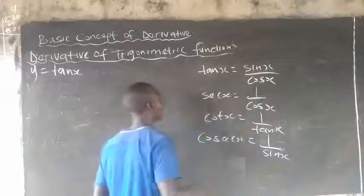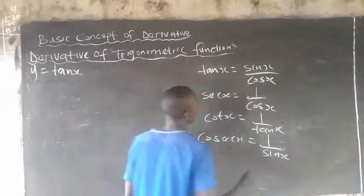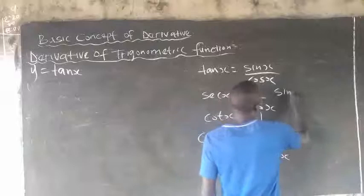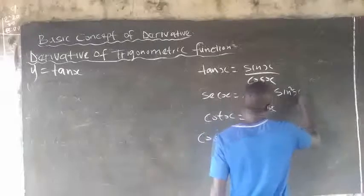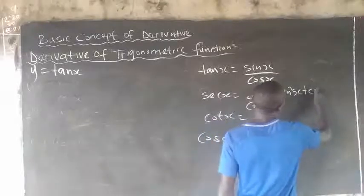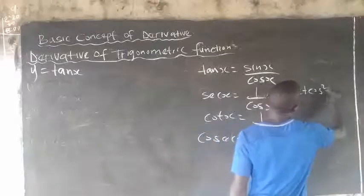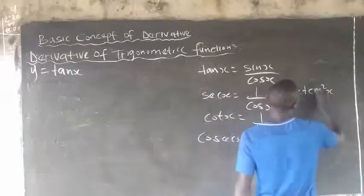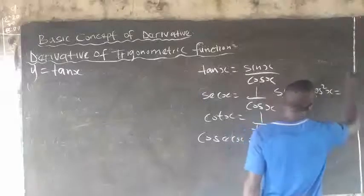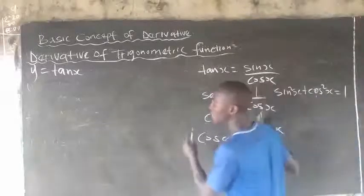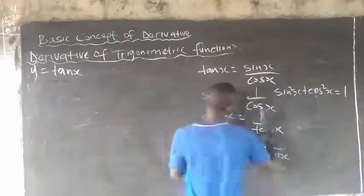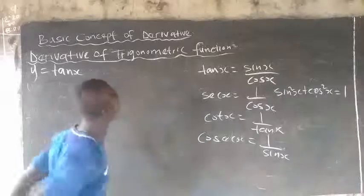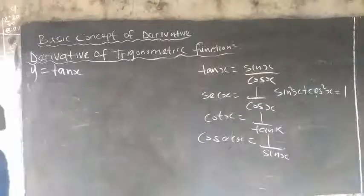And don't forget that sin squared s plus cos squared s is nothing but 1. Okay, I think this is all we need here.